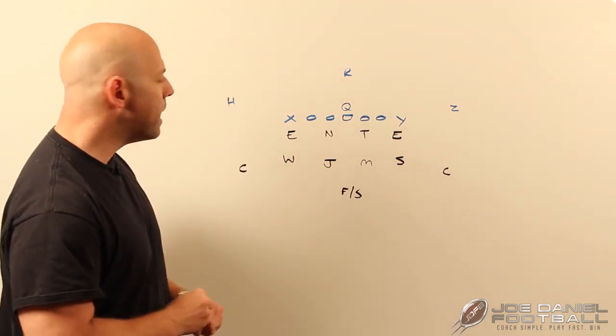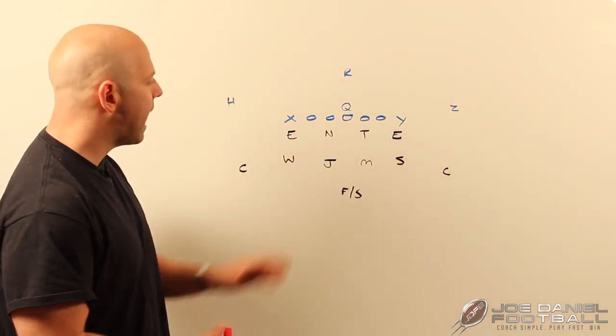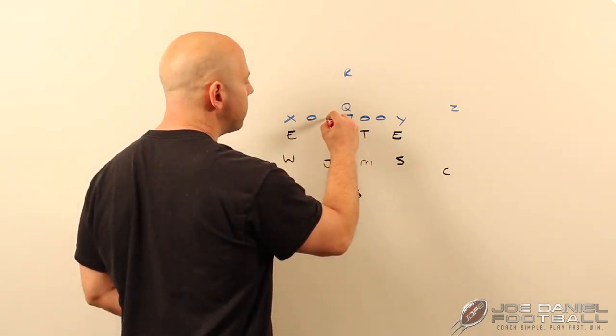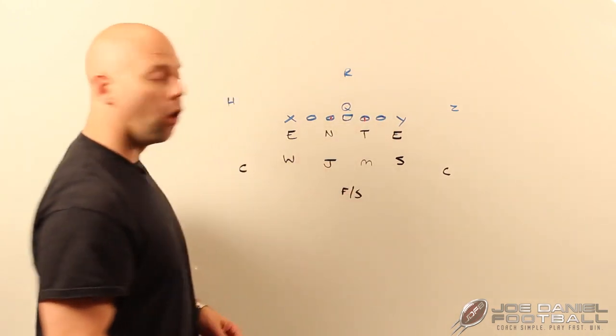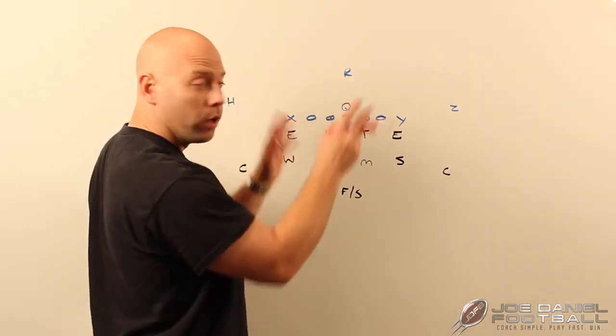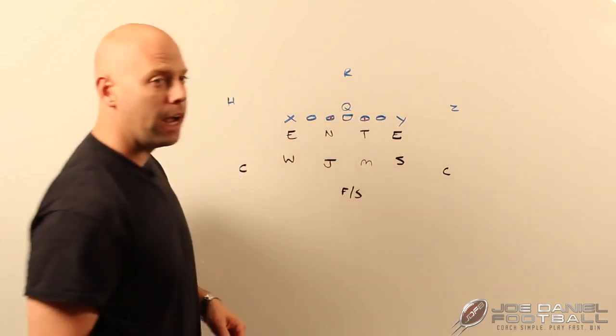Basically what we have in this is we've got stacked defenders here and that's why I use the two tight ends because we're going to play a head up two technique on the guards with our nose and our tackle and our jack and our mic, whatever you want to call your inside backers, is going to be directly behind them.